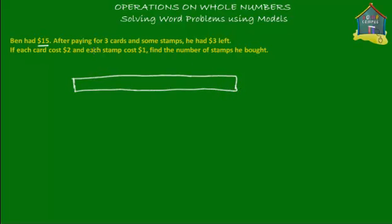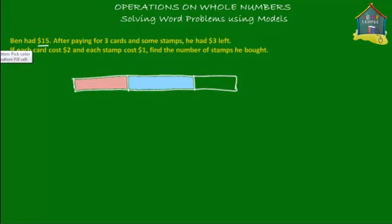Now, how did he spend the money? He bought some cards and he bought some stamps. So this block represents the amount of money he spent on the cards — let's color it pink. And this block represents the amount of money he spent on the stamps, and this block represents the amount of money he had left.